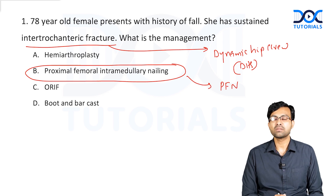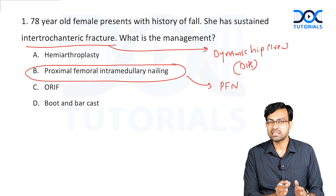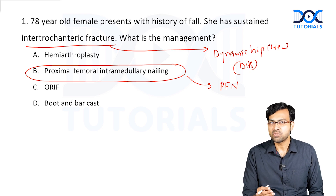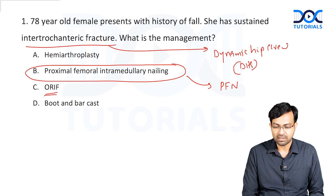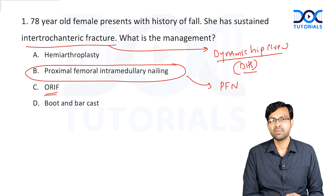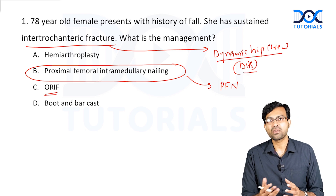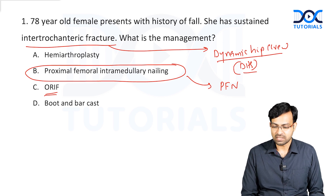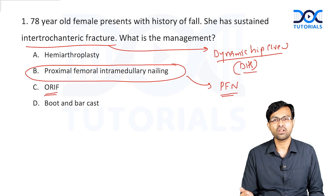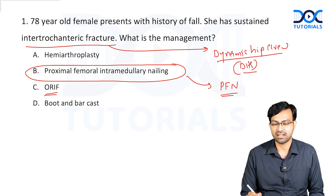Some students have told me that instead of ORIF, dynamic hip screw was given as an option with no proximal femoral nailing. If that is the case, then DHS is the correct option. So whichever has come in your exam — whether it is PFN or DHS — you have to choose that. That is the correct answer.